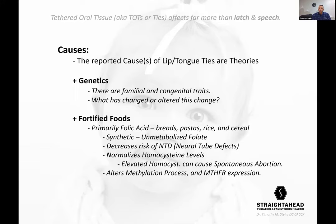If the methylation process is altered, that can lead to midline defects. That's a topic for another day — really involved. But tethered oral tissue, or TOTs, would be classified as a midline defect. The frenula or frenulum is the anchor from the tongue to the bottom of the mouth — what holds our tongue and keeps it from going down our throat. It also helps with articulation, speech, breastfeeding, whistling, and licking a lollipop.